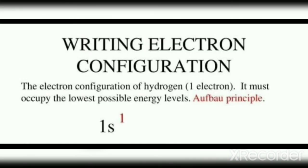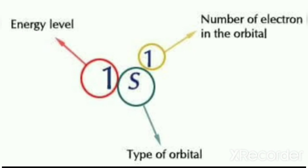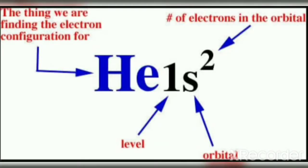Let us now see how to write electronic configurations. For hydrogen, one electron is present, so the electronic configuration in SPDF notation is 1s¹, where 1 denotes the main energy level, s denotes the type of orbital, and 1 gives the number of electrons. For helium, with atomic number 2, the electronic configuration is 1s².